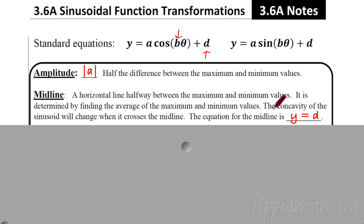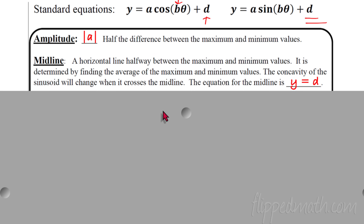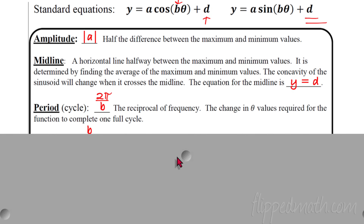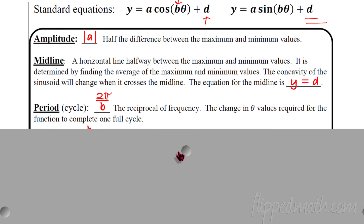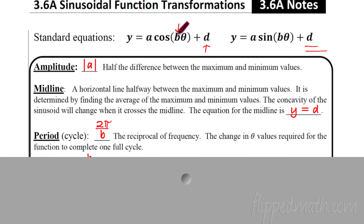We had to do that in the practice. The concavity of the sinusoid will change when it crosses the midline. And now because the graph isn't centered on the x-axis, you're going to have a new equation. It's y equals d. So this value at the end of your equation is d, and so the midline will just be y equals d. Now the period. Last time we said the period was just two pi, but that's because b was equal to one — we didn't have a number in front. So technically it was two pi over b with b equal to one. We didn't tell you that. We're telling you now though.